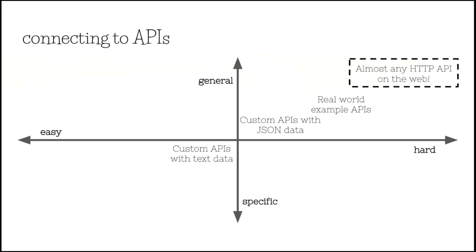Once they got text data, they had all the information that they needed. Then we introduced something slightly more complex — getting using our own custom-made APIs. And we had simple JSON data, so they didn't have to do anything too complicated to get the JSON data out. Then we talked to them about looking at real-world example APIs.